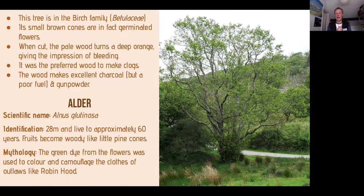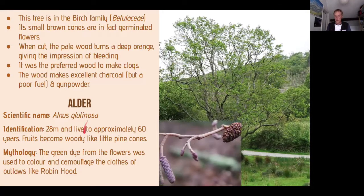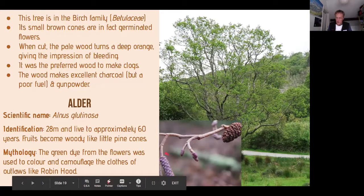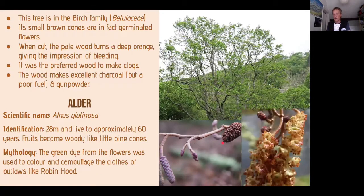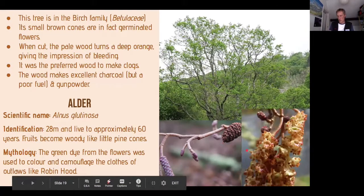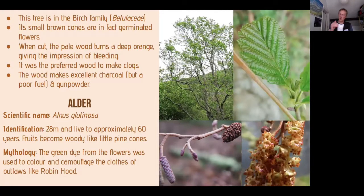Green dye from alder was used to colour and camouflage clothes in Robin Hood's day. It has a huge number of varied uses. The male flower is elongated, the young female flower is tiny, and the fertilized female flower looks like a cone. The leaf is blunt-ended, toothed and jagged. Alder has deep roots and can fix nitrogen, enriching the soil around itself. It can also withstand drying out — a common wetland tree.